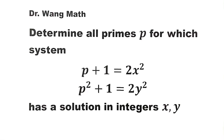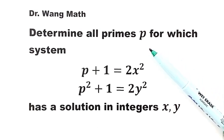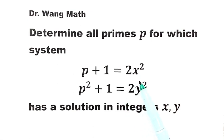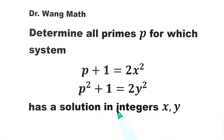In this video, we're going to solve a question from the German Math Olympiad. The question is: determine all prime numbers p for which the system p plus 1 equals 2x squared, and p squared plus 1 equals 2y squared, has a solution in integers x and y.